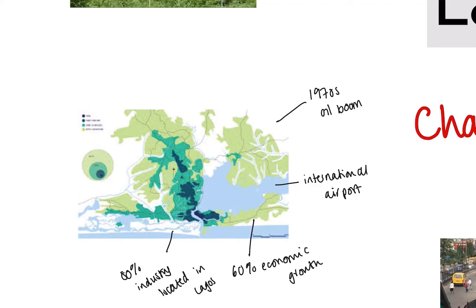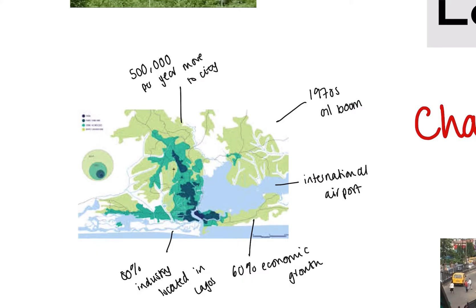One of the reasons Lagos has grown so much is because of rural to urban migration — people moving from the countryside to the city. In Lagos it's about 500,000 people per year that move to the city. They could be in search of things like a better quality of life, employment and education, thinking that moving to Lagos is going to be the answer.